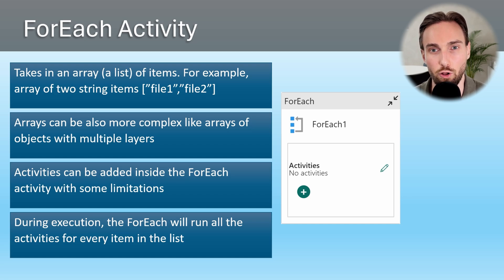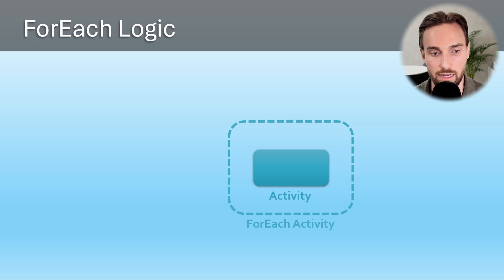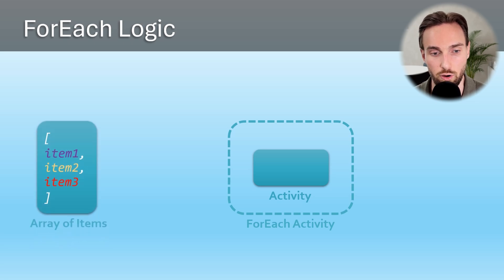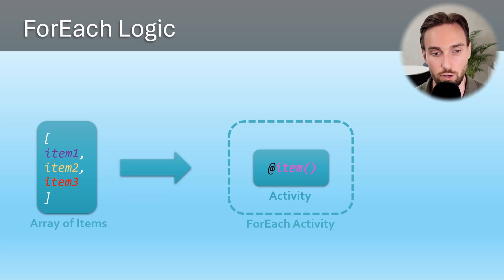Now let's go through how this iterative logic works. Here we have our ForEach activity, and inside it we have another activity we would like to execute as part of our ForEach logic. Then we have our array of items — in this case three items passed down to the ForEach activity. The values in this array could be any data type supported in data pipelines: an array of strings, an array of integers, or even an array of objects. Inside the activities in the ForEach, we reference the current item using the @item() reference, which fetches the current item in the loop from the list.